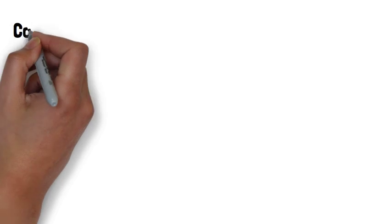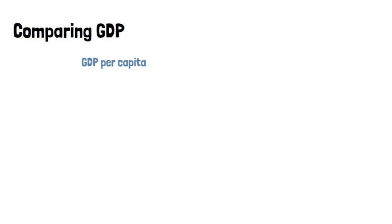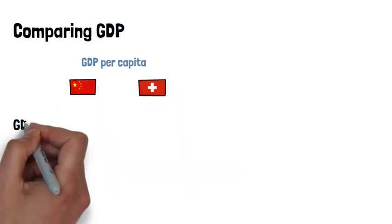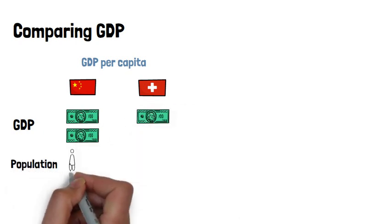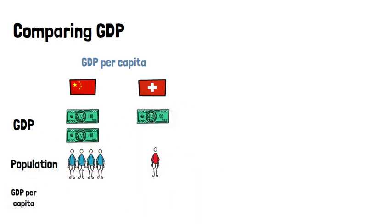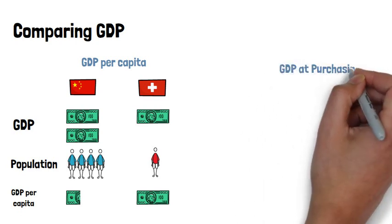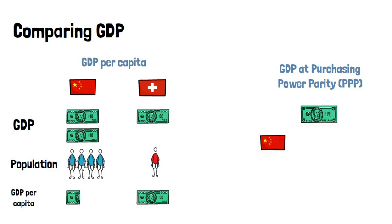To compare the GDP between different years or countries, we can look at the level of GDP per person, also called GDP per capita. This is calculated by dividing the total GDP by the number of people in a country. A small country can have a smaller total GDP than a big country, but its people may be better off.